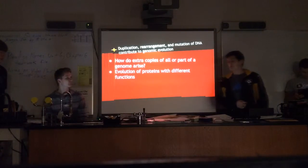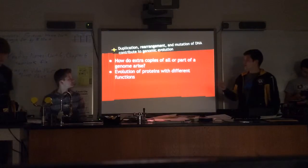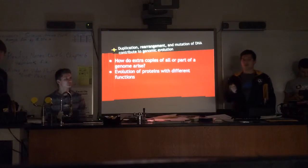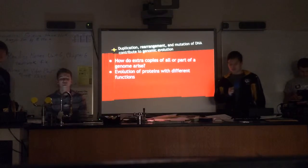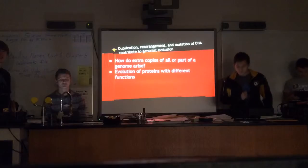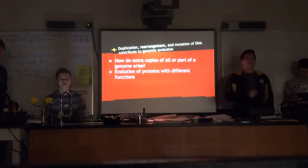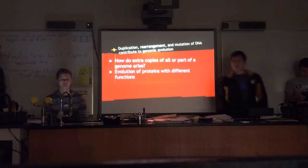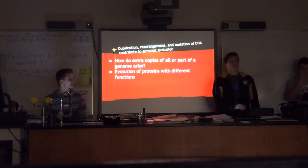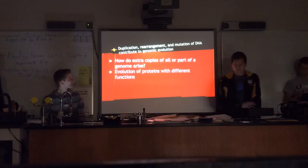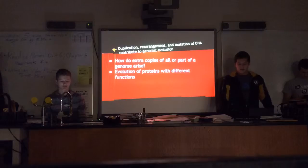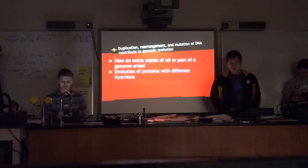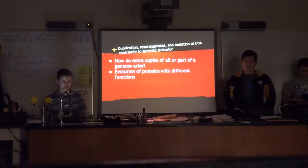In this section, I'm going to focus on two main points: how do extra copies of all or part of the genome arise, and the evolution of proteins with different functions. The basis of change at the gene level is mutation. It seems likely that the earliest life forms had a minimal number of genes — those necessary for survival or reproduction. One aspect of evolution must have been an increase in the size of the genome, with this extra genetic material providing gene diversification.